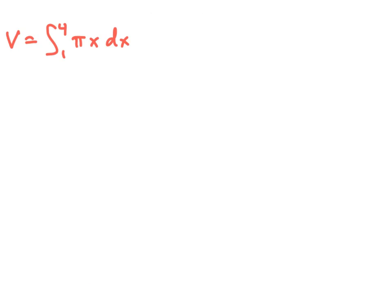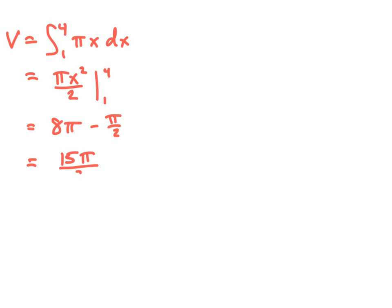Now we can compute this definite integral. We find an antiderivative of pi x, which will be pi x squared over 2, and we evaluate this from 1 to 4. When x is 4, we get 16 pi over 2, which is 8 pi. And we subtract pi over 2. So we get 16 pi over 2 minus pi over 2, giving an exact volume of 15 pi over 2. This is the volume of the solid obtained by rotating this particular region around the x-axis.